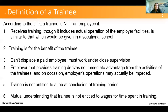Four: the employer provides training that derives no immediate advantage from the activities of the trainees, and on occasion the employer's operations might actually be impeded. If you have an unpaid trainee filling a certain role and that trainee were to go away and you'd actually have to hire somebody, you want to rethink whether that's truly a role for an unpaid intern or trainee. Five: a trainee is not entitled to a job at the conclusion of the training period — there should be no expectation of hiring. And six: there should be a mutual understanding that the trainee is not entitled to wages for time spent in training.